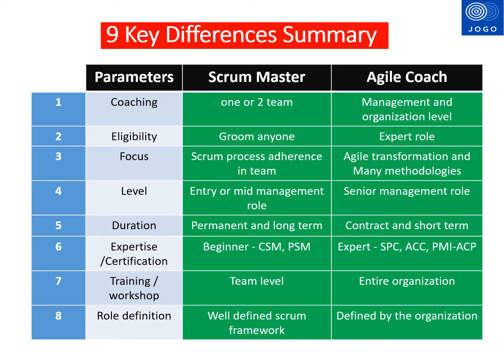I have captured the key differences between the Scrum Master and Agile Coach role in table format. The parameters are listed in the first column and the role differences are highlighted in columns 2 and 3. The coaching scope of the Scrum Master is 1 or 2 teams, but for the Agile Coach it will be the entire organization along with the management. Any team member can play the Scrum Master role, so the expectation will be very less and there is an opportunity to learn and grow. But for the Agile Coach, he or she is expected to be an expert in Agile methodologies.